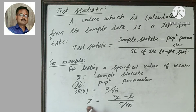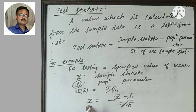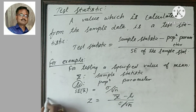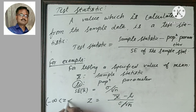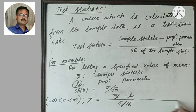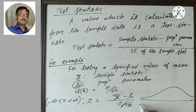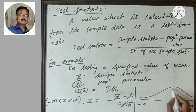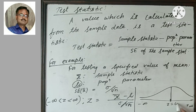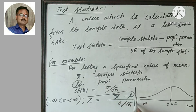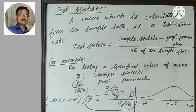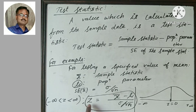The z value ranges from minus infinity to plus infinity. It is used to decide whether the null hypothesis is accepted or rejected. It is also known as the calculated value.